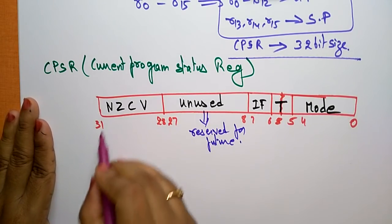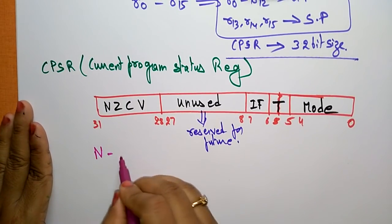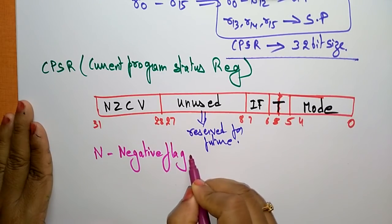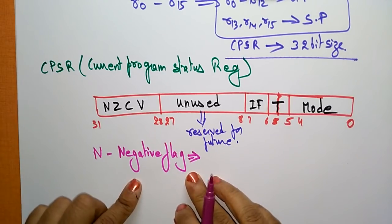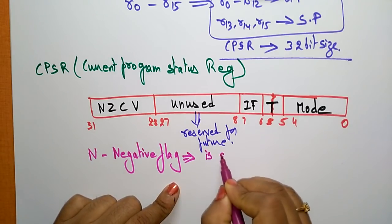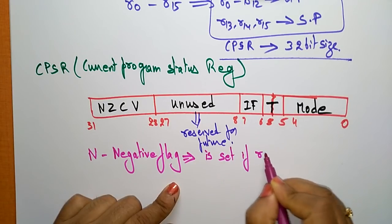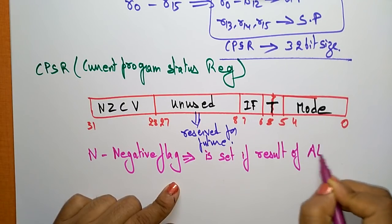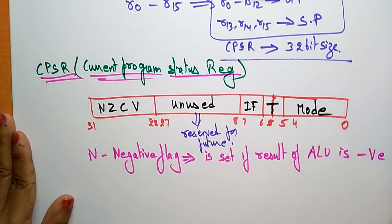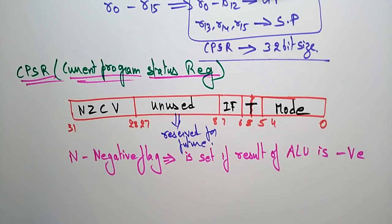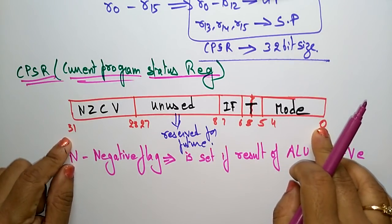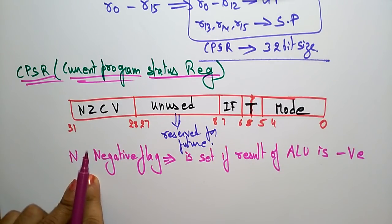Now let's see what N is. N is the Negative flag. This negative flag is set if the result of the ALU is negative. We are talking about the Current Program Status Register — one of the 32-bit registers in ARM's register organization. N is the Negative flag.